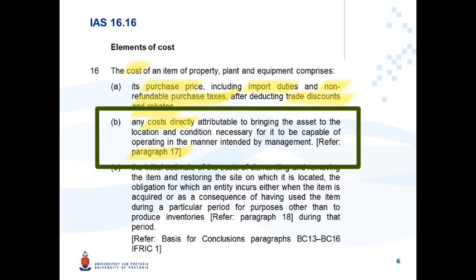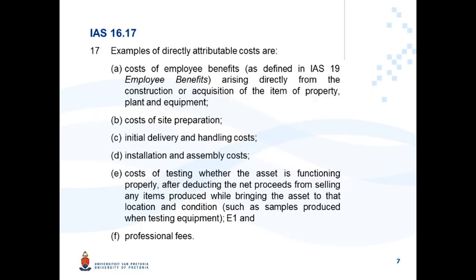Paragraph 16c discusses the costs incurred relating to dismantling and removing of the item, which will form the topic of a future discussion. Paragraph 17 gives us examples of directly attributable costs.